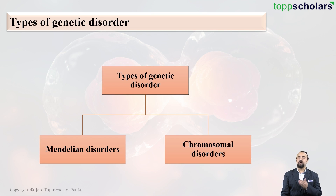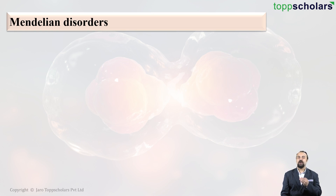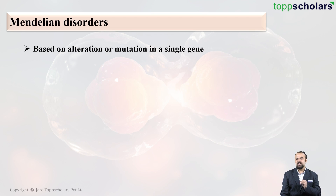Let us first talk about Mendelian disorders, which have been named after the father of genetics, Johann Gregor Mendel. These are based on alteration or mutation in one single gene. Only a problem in one single gene causes these disorders. Let us take a look at certain examples.